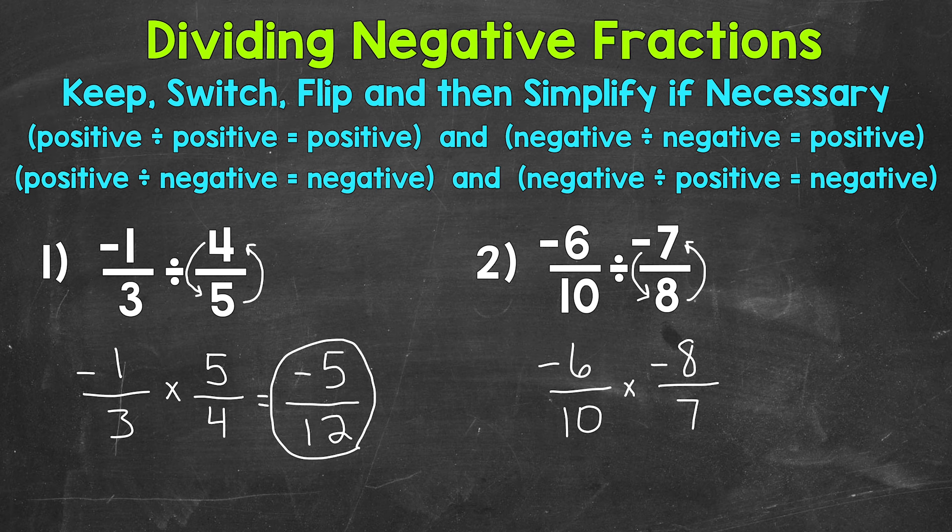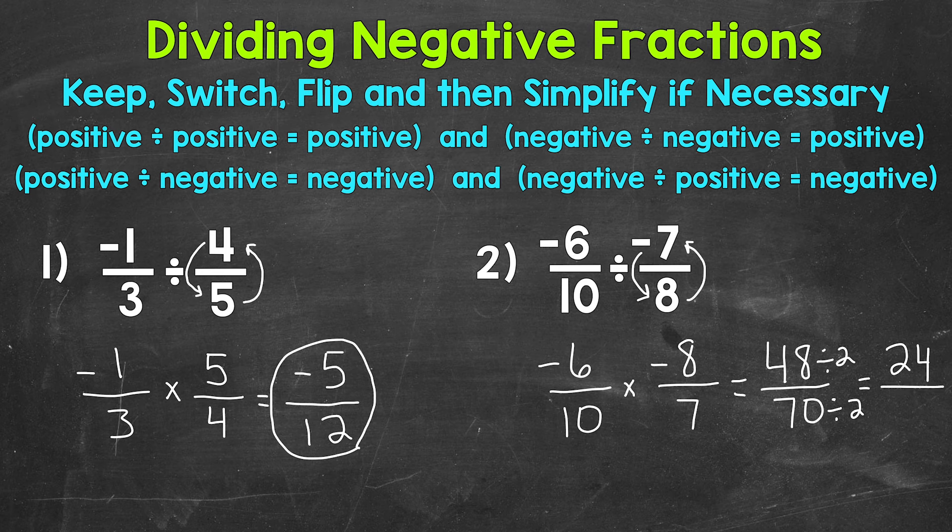Now we're ready to multiply straight across. So we have negative six times negative eight. A negative times a negative is a positive. So we have 48. And then 10 times seven is 70. So we have 48 70ths. Now this fraction can be simplified. We have a greatest common factor of two. So let's divide both our numerator and denominator by two in order to simplify. So 48 divided by two is 24, and 70 divided by two is 35. So 24 35ths is our simplified answer. So there you have it.